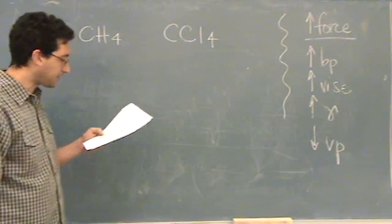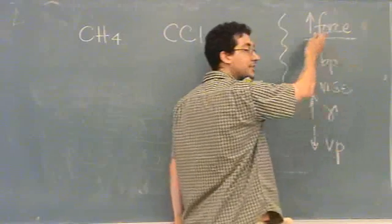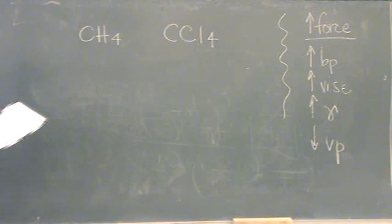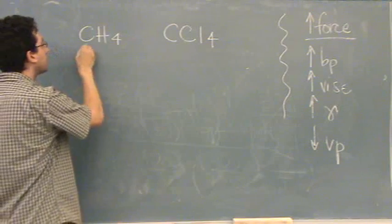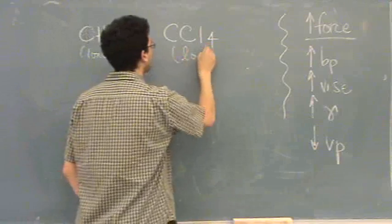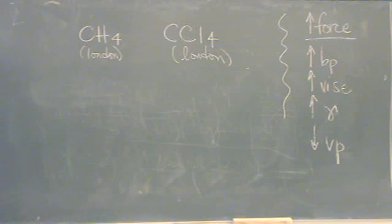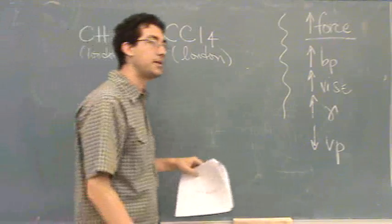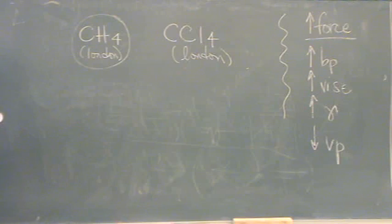We're looking in this first part for the highest vapor pressure. So for high vapor pressure, that means a low force. So which one has the lowest force? Let's first do, what's the dominant force in both? They're both London. Then we want to look at which one has the smaller force, the one that's smaller. CH4 is the smaller one because hydrogen is smaller, so that one will have the highest vapor pressure.